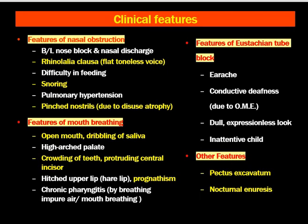Features of Eustachian tube block include earache — the child with adenoids may occasionally have ear pain — and conductive deafness due to otitis media with effusion. The child presents with a dull, expressionless face and inattentiveness in class. Other features such as pectus excavatum and nocturnal enuresis may also occur in children with adenoids.